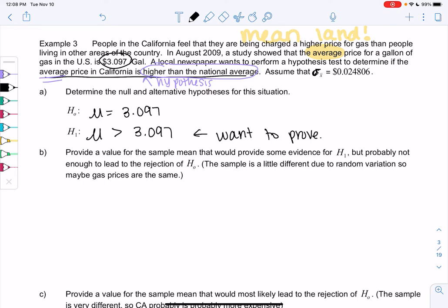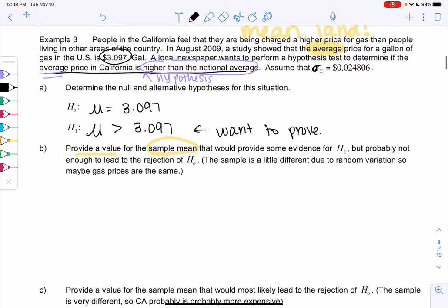So we're basically going to disprove that it equals $3.09 to prove that it's actually higher. So we'll do some examples similar to last time, but we're going to come up with the value on our own. So we're going to provide a value for the sample mean, which means we need a value for x-bar, that would provide some evidence for H1, but probably not enough to lead to a rejection.